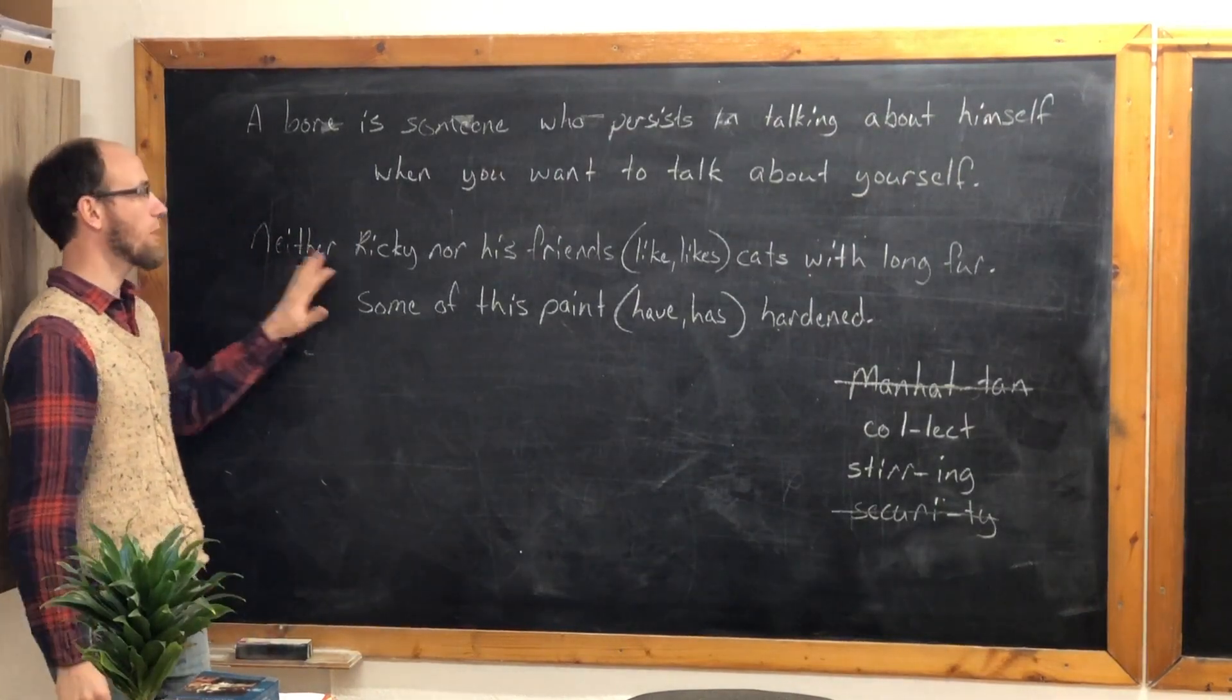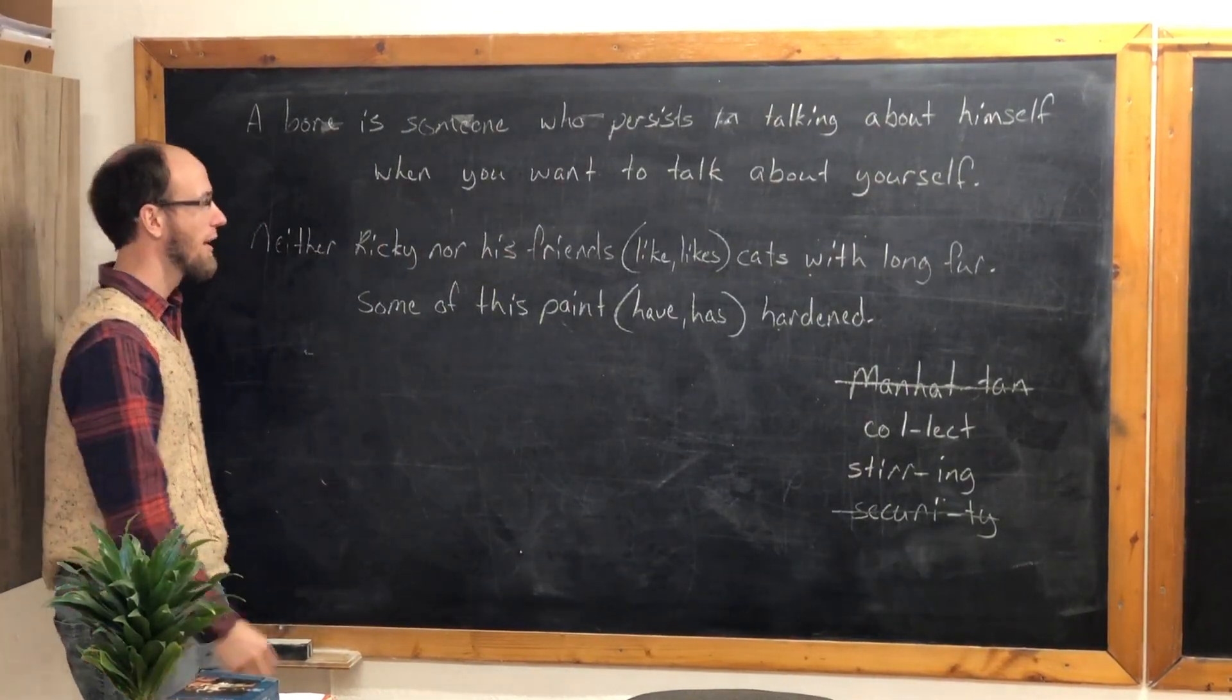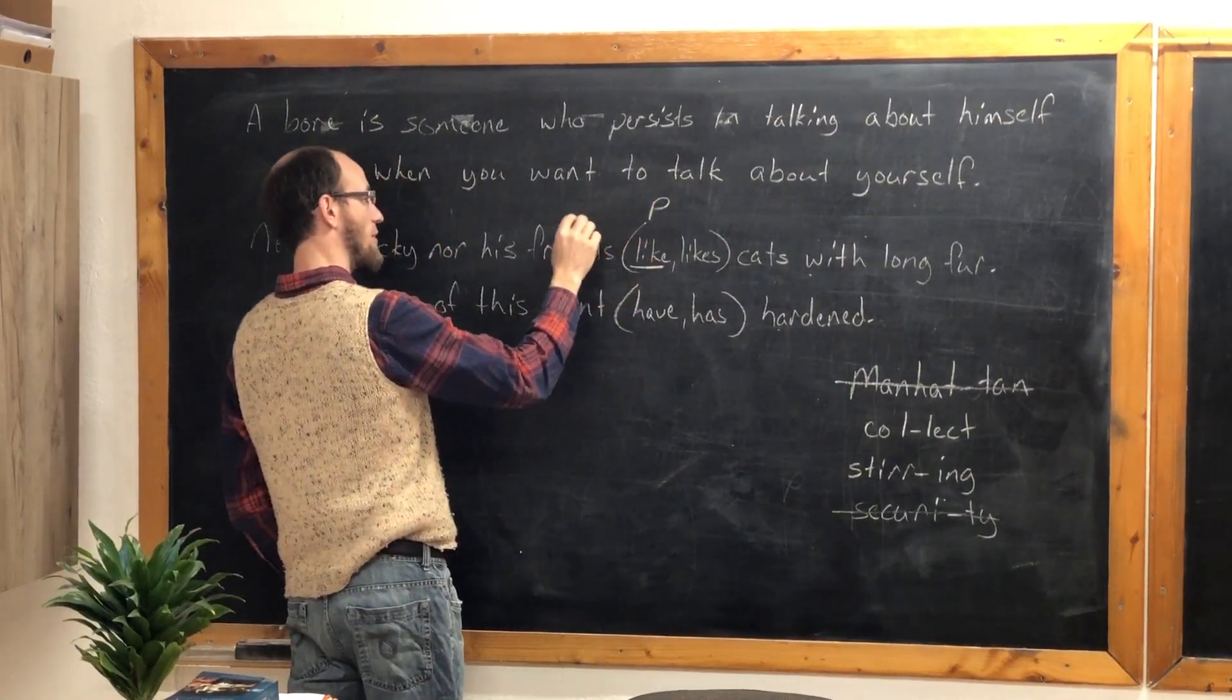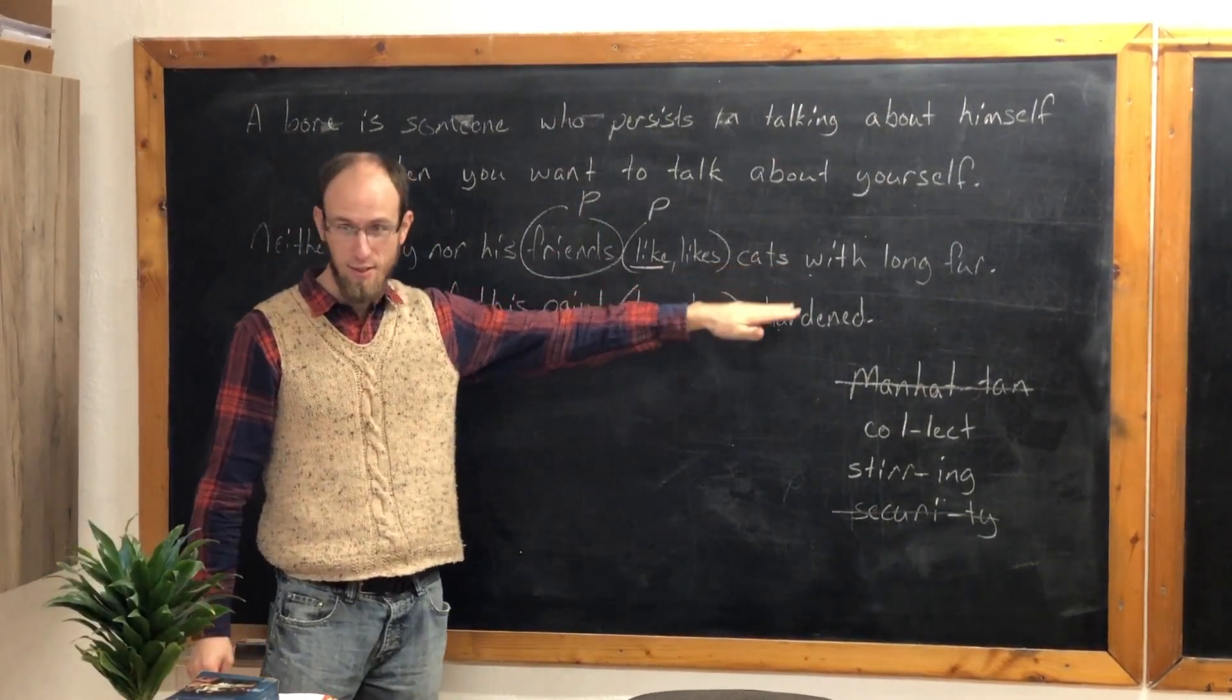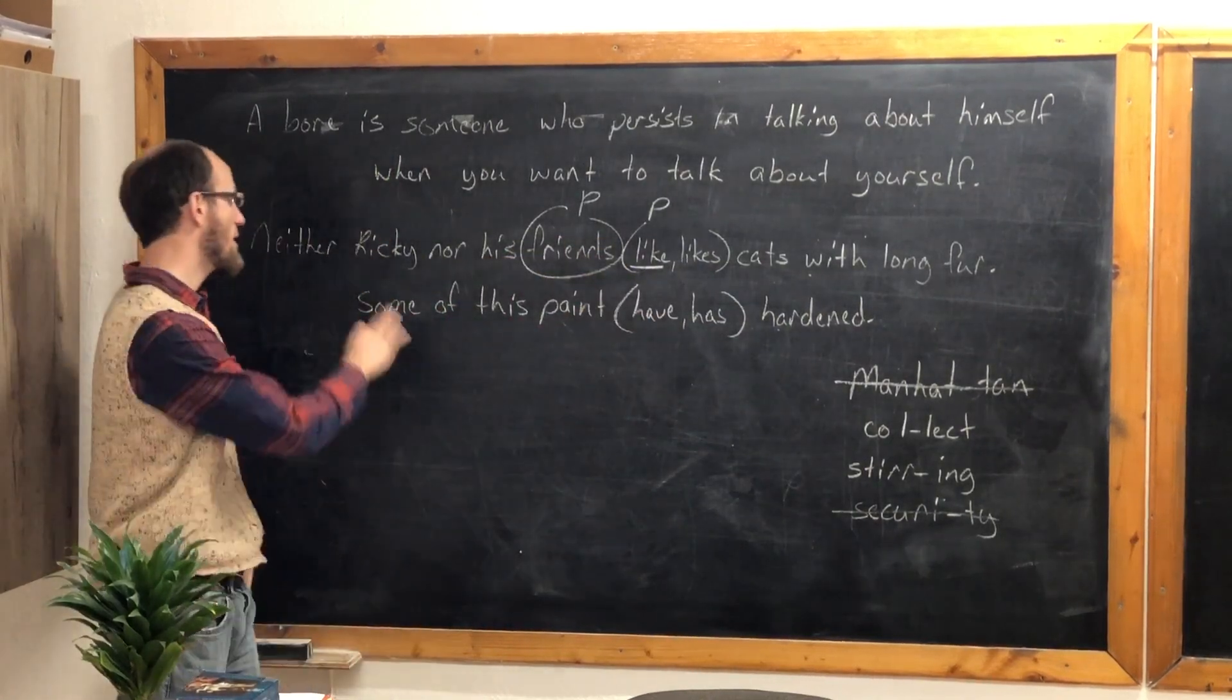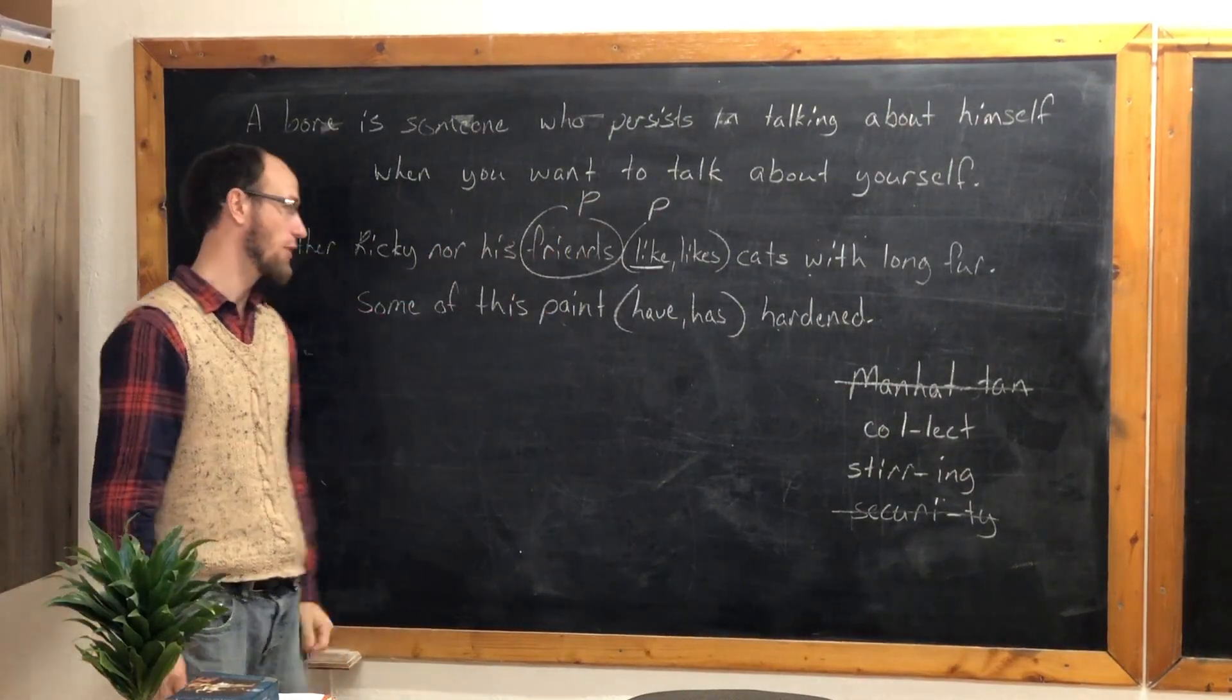Or neither nor the same way. Neither Ricky nor his friends like or likes cats with long hair. Like. We'll choose this verb because it is plural, because friends is also plural. Even though Ricky likes cats, we'd say Ricky likes cats, but we'd say friends like. This neither nor totally splits them. And all we focus on is the last one, the one that comes right before the verb.